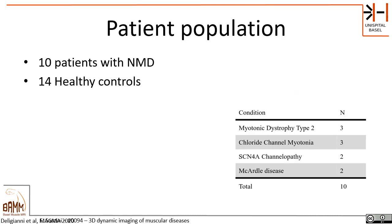We applied this method on a population of 14 healthy controls and 10 patients with neuromuscular diseases. As you can see from this table, the neuromuscular diseases represented a range of conditions with a couple of patients in each type.